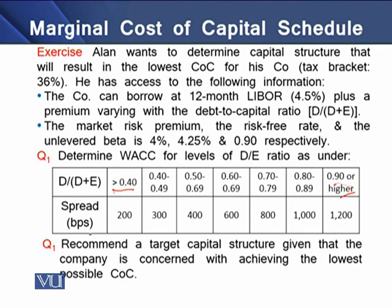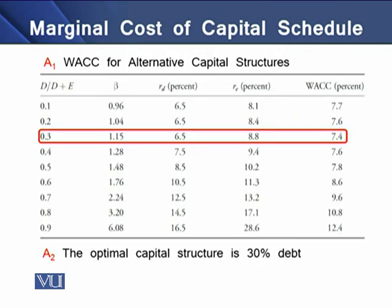Accordingly, we have a spread ranging from 200 basis points to 1200 basis points in line with our debt-to-equity ratio. Question one asks us to determine WACC for each level of debt-to-equity ratio ranging from less than 40% to 90% or higher. Question two asks us to recommend a target capital structure given that the company is concerned with achieving the lowest possible cost of capital. For question one we have a table developed for this purpose.